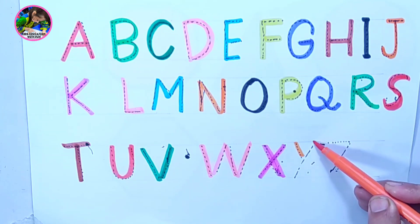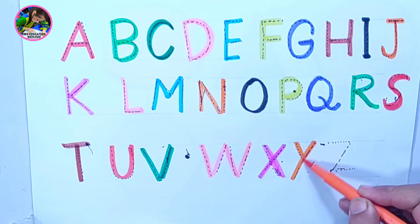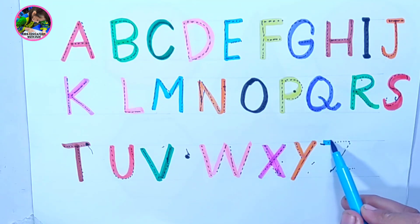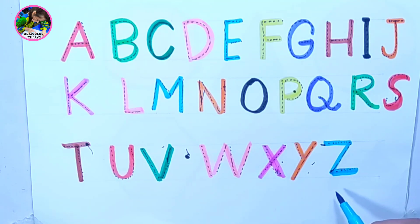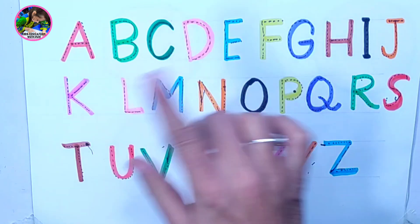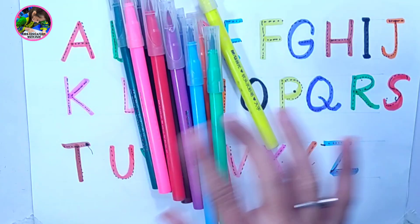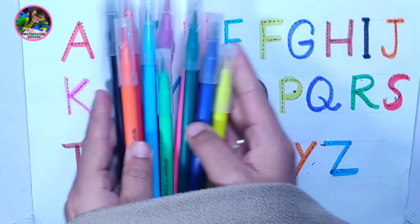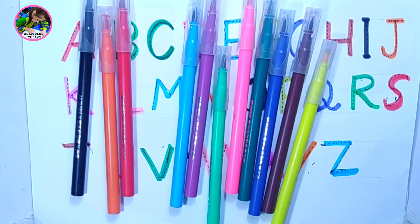Orange color — letter Y. Y is for Yo-yo. Sky blue color — letter Z. Z is for Zebra. Wow, we have done it! Dear kids, do the same practice using different colors. Use different colors and do the same practice. Share this video and subscribe to the channel. Thanks for watching, bye bye!